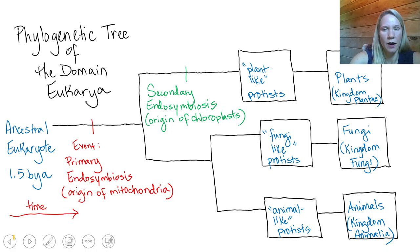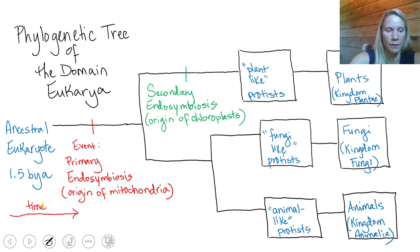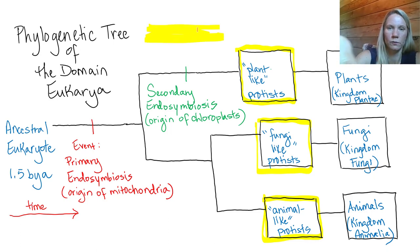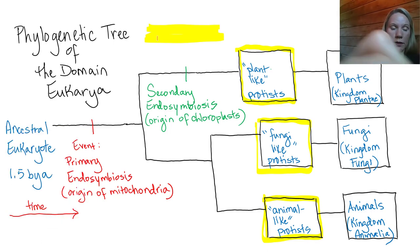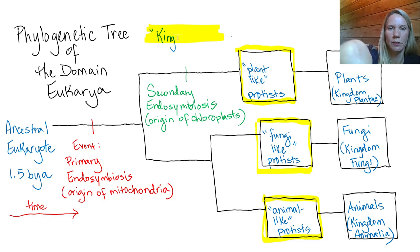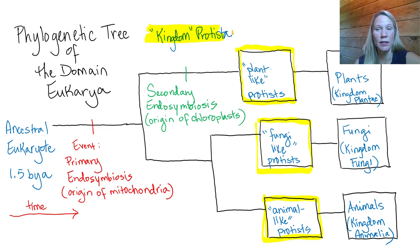It gets a little complicated when we look at this category. Let's highlight these three protist categories — and we'll put this in quotes because it's not really agreed upon — the kingdom Protista. The kingdom Protista encompasses these three categories: some that are plant-like, some that are fungal-like, and some that are animal-like. In the next lecture video I'm going to tell you more about the kingdom Protista.